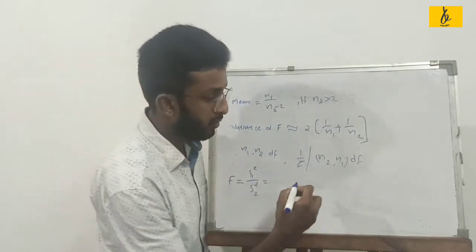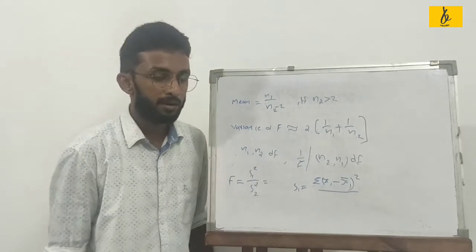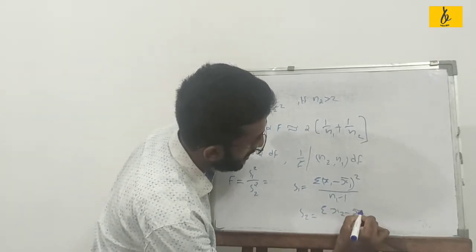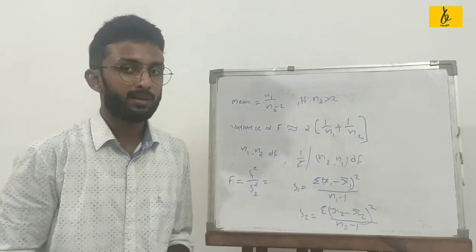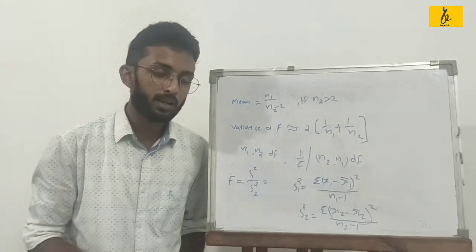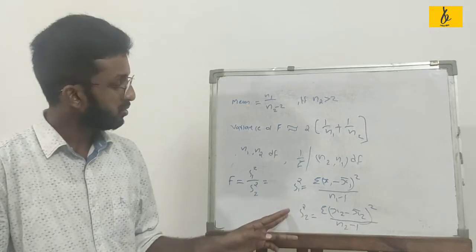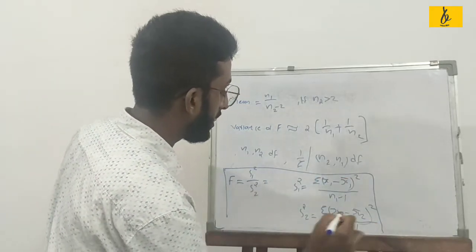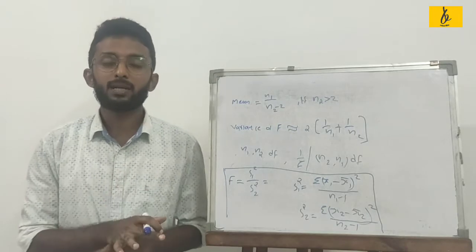S1 square is equal to sigma of x1 minus x1 bar whole square divided by n1 minus 1. S2 square is equal to sigma of x2 minus x2 bar whole square divided by n2 minus 1.